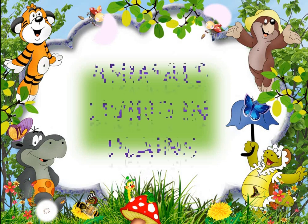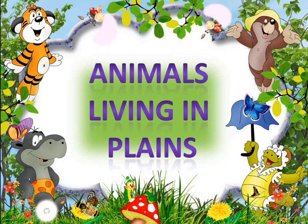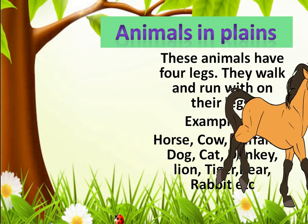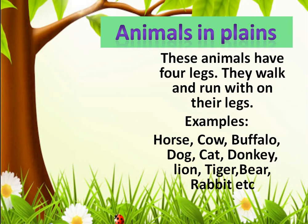First, we will be doing animals in plains — animals living in plain areas. In the plains, these animals have got four legs and they walk and run on their legs. Examples are horse, cow, buffalo, dog, cat, donkey, lion, tiger, bear, rabbit, and many, many more animals.